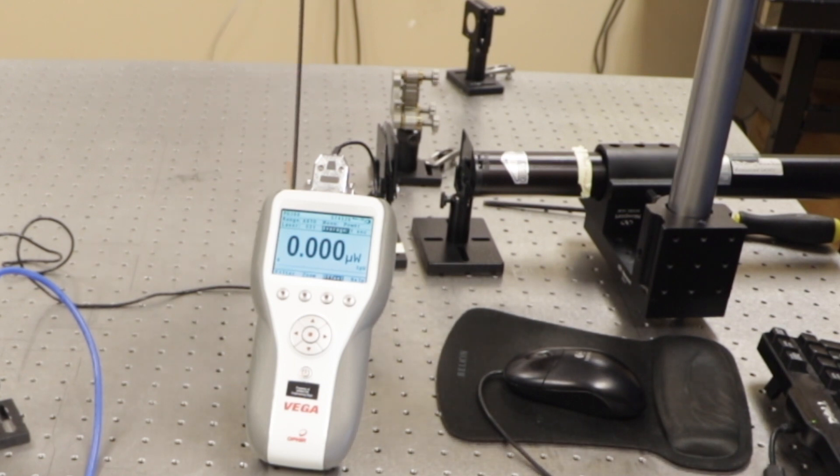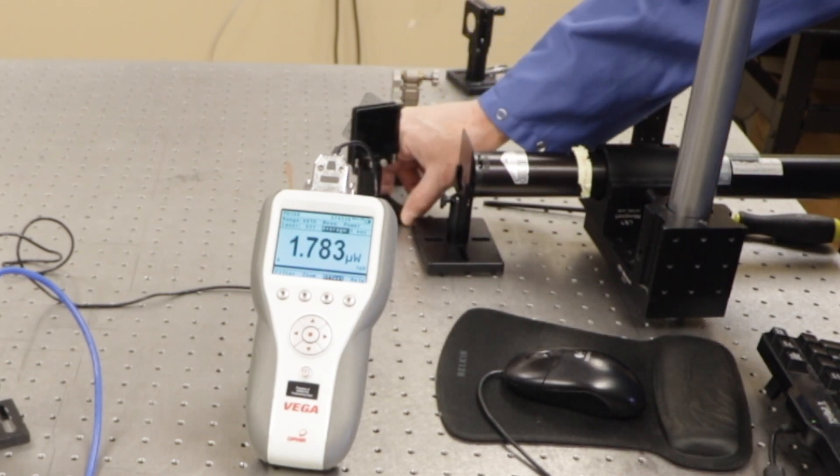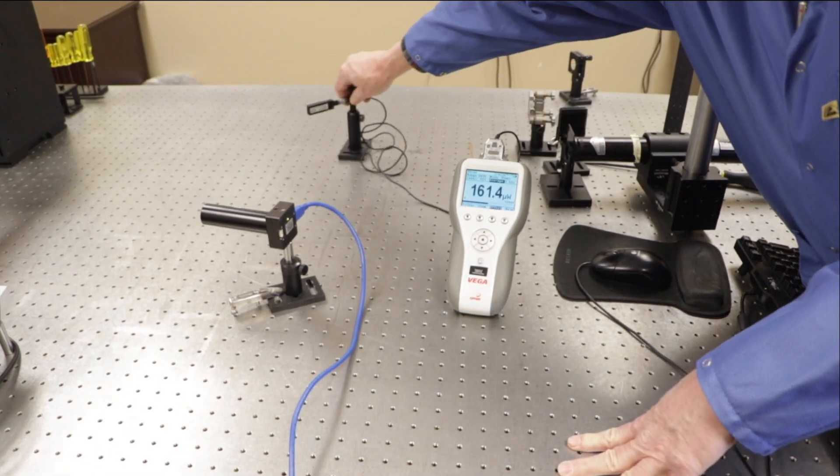We block the beam to zero the offset on the meter. Unblocking the sensor shows the attenuated beam contains 1.6 microwatts. When we remove the ND filters, the beam measures 160 microwatts, 100 times more powerful.